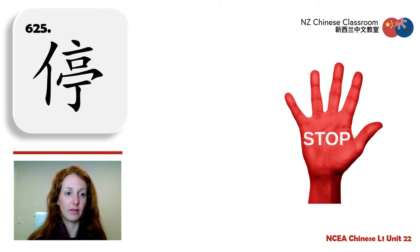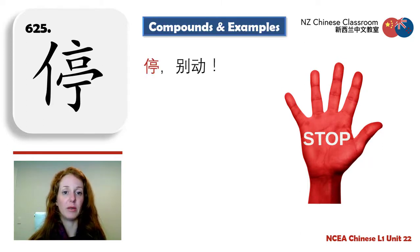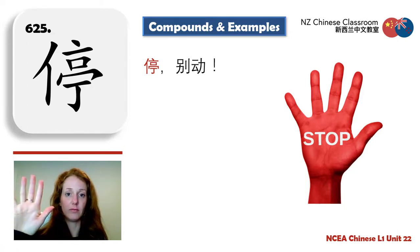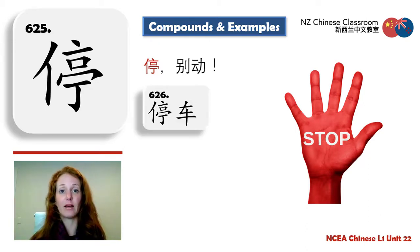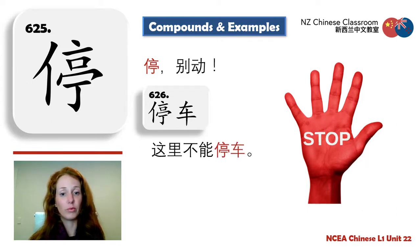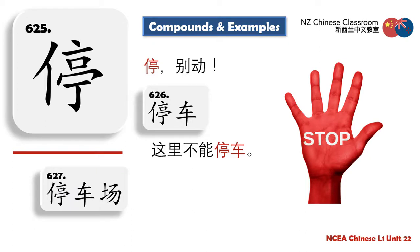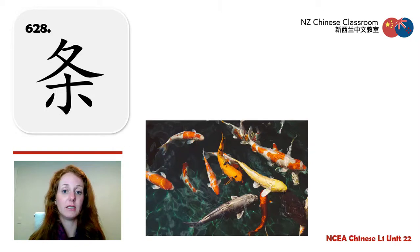停 — stop. Think of a way to remember this character. 停 means to stop or to park a car. Example: You can't park a car here, maybe you're on the sidewalk. 停车场 — a parking space or car park, because 场 is a big outdoor area. This car park is very big.